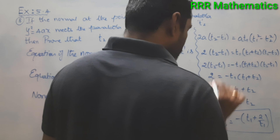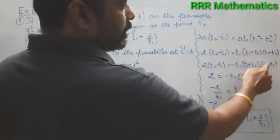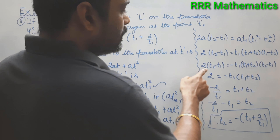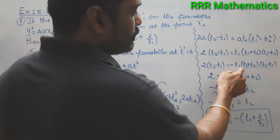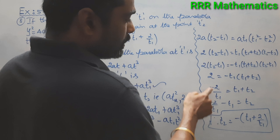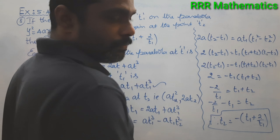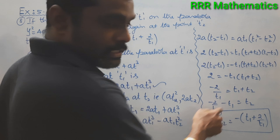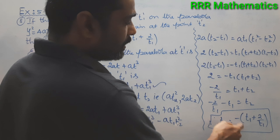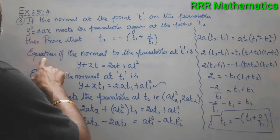After cancelling (t2 - t1) from both sides, we are left with 2 = -t1·(t1 + t2). Bringing -t1 to the other side gives -2/t1 = t1 + t2. So t2 = -t1 - 2/t1, which taking minus common gives t2 = -(t1 + 2/t1). Hence proved.